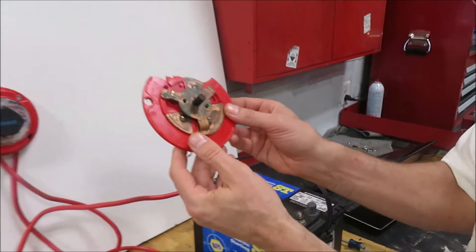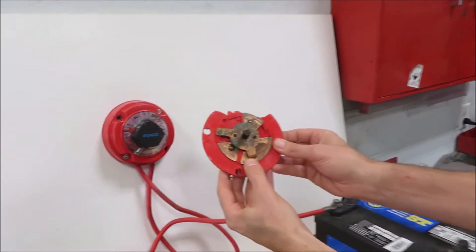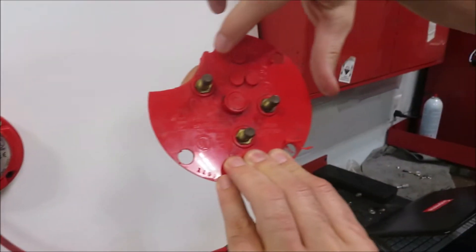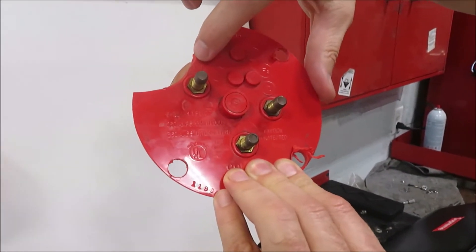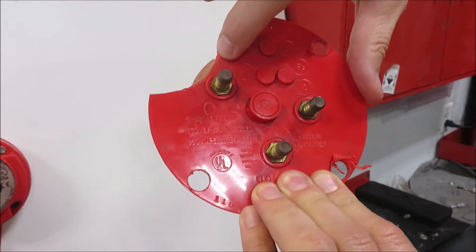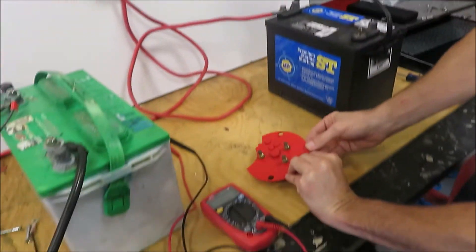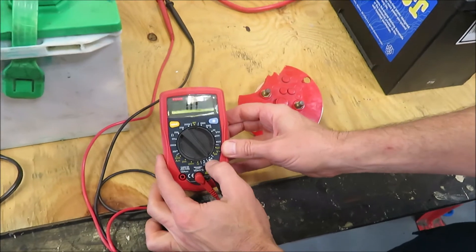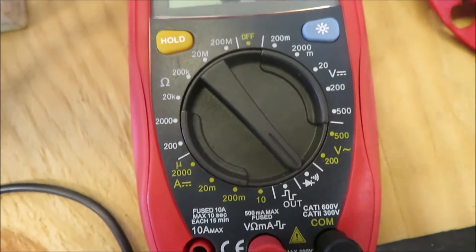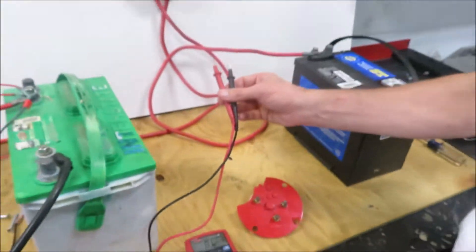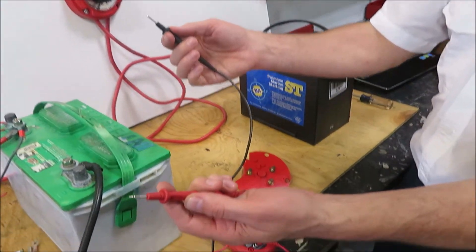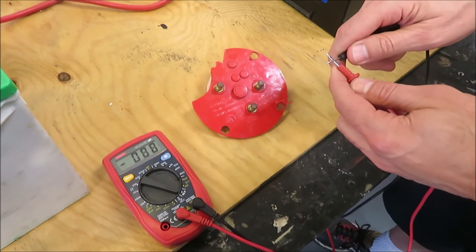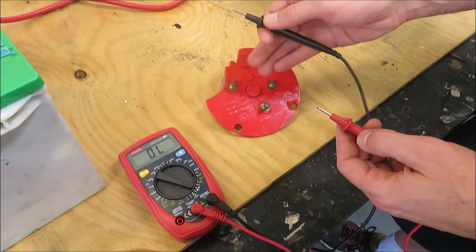This would be the equivalent of position one right here. You're attached to, you're touching or making contact with post number one and the common. You'll test it on the continuity setting. So we've got continuity. This should be reading zero. And that's what we want to see when we're testing the switch.